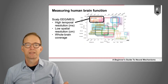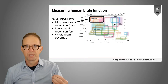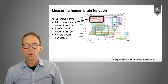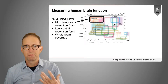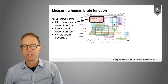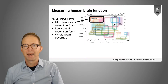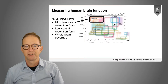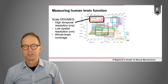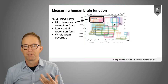We can measure electrical activity using electroencephalography on the scalp, or by measuring the magnetic fields that arise from electrical activity using magnetoencephalography or MEG. These methods both have relatively high temporal resolution — they can resolve events happening on the order of milliseconds — but relatively low spatial resolution, resolving features only on the order of centimeters. Both of them have whole-brain coverage.